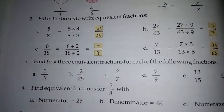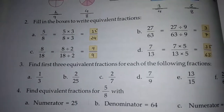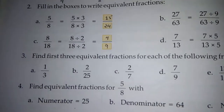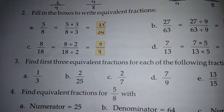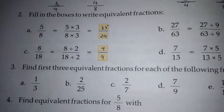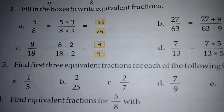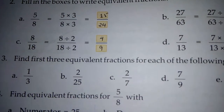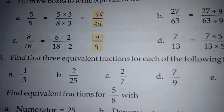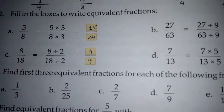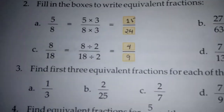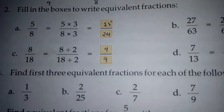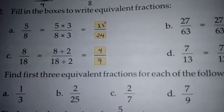Next: fill in the box — aapko yahan equivalent fractions likhne hain. 5 by 8 ka equivalent fraction nikalna hai. Agar aap 3 se multiply karenge: 5×3=15 aur 8×3=24. So 15 by 24 is equivalent to 5 by 8.